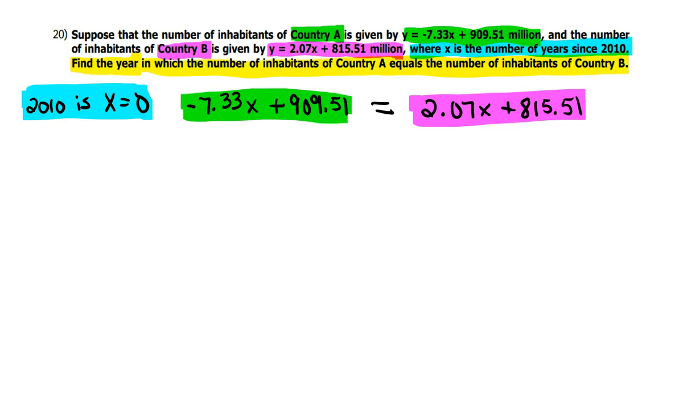So, again, you can graph it if you want and find that intersection point. You let the green one be y sub one, and the pink one be y sub two, and go through all that. Or you can just solve it algebraically, which is the way I'm going to go on this.